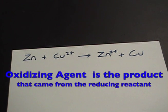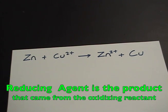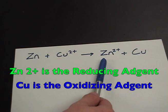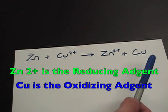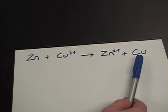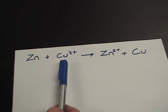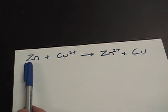The oxidizing agent is the product that came from the reducing reactant. The reducing agent is the product that came from the oxidizing reactant. In this example, zinc 2 positive is the reducing agent and copper is the oxidizing agent, since copper came from copper 2 which was reduced, and zinc 2 positive came from zinc which was oxidized.